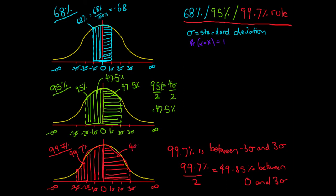So we've got 49.85% of our data on each side — nearly all of our data is captured within that range. Those are the 68%, 95%, and 99.7% rules. There are some examples online for you to have a look at. Thanks — bye!